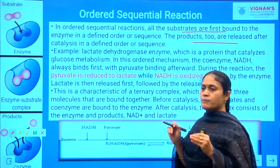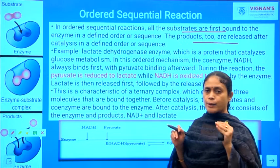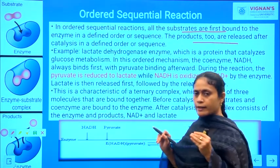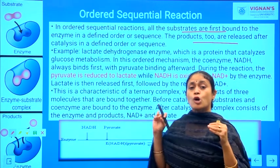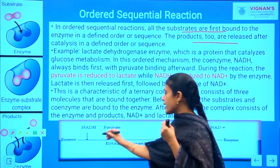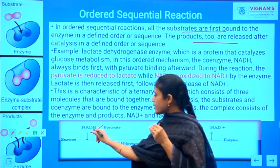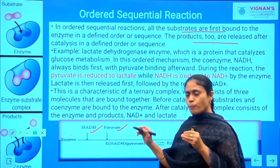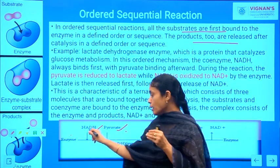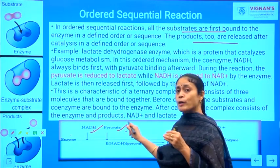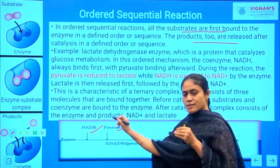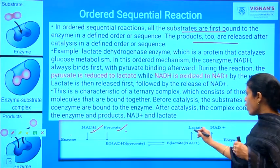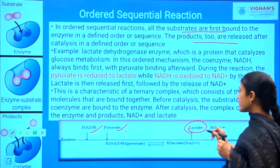For example, consider the enzyme lactate dehydrogenase, which catalyzes the reaction where pyruvate is converted into lactate. In this reaction, the enzyme must first bind to the coenzyme NADH. Once the coenzyme binds to the enzyme, the enzyme becomes active upon the substrate molecule. Before the substrate binds, the coenzyme must bind — this is in a proper order. Then, once binding of the coenzyme as well as the substrate takes place, the reaction proceeds and lactate is formed as product.